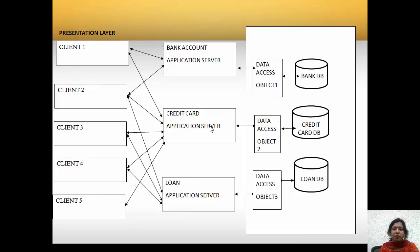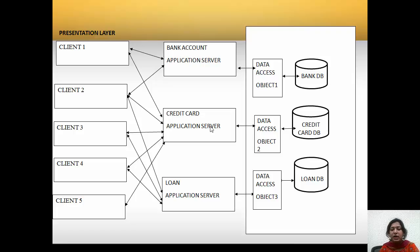We can see another example of this three-tiered architecture in which we have different types of application servers — a bank account application server, a credit card application server, and a loan application server — all connected to databases located on a single remote server. Each client, based on their requirements, will access that particular application server, so the load on the DBMS database is far more reduced.